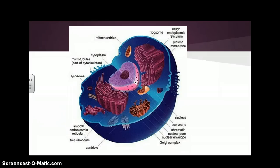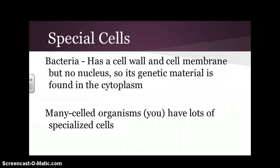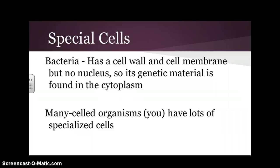Take a minute to look at the picture and see if you can find some of the things we just talked about to become more familiar with what they look like. There are also specialized cells — not all cells look like the pictures shown. Bacteria, for instance, has a cell wall and a cell membrane but doesn't have a nucleus, so its chromatin and chromosomes are found floating in the cytoplasm. Many-celled organisms like you have lots of specialized cells, and we'll talk about those as we discuss the different organ systems. Make sure you write everything down, and if you have questions, write those down too and we'll talk about them in class.